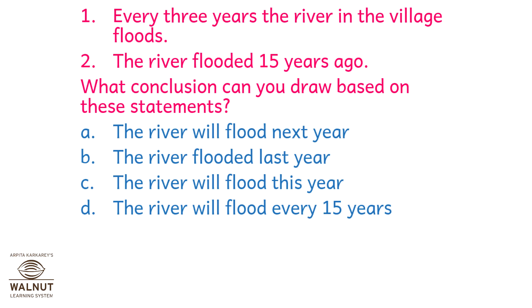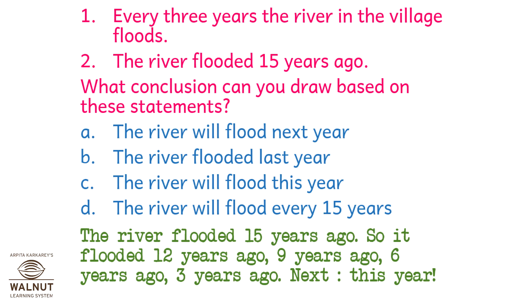Point 1: Every three years the river in the village floods. Point 2: The river flooded 15 years ago. What conclusion can you draw? The river flooded 15 years ago, so it flooded 12 years ago, 9 years ago, 6 years ago, 3 years ago — and next: this year. So the river will flood this year. We choose option C, assuming the river floods every 3 years as stated.